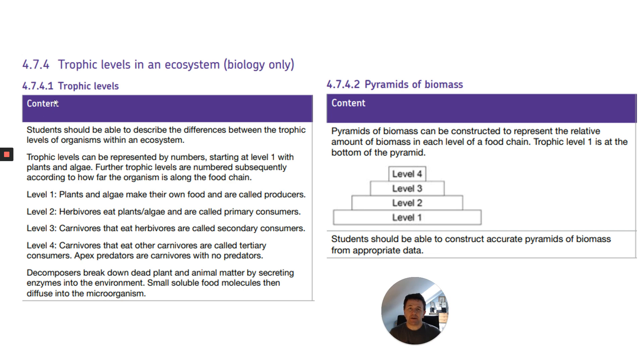Let's do a quick spec check. We're going to look at describing the differences between trophic levels of organisms within an ecosystem, and then pyramids of biomass, how you construct them to represent the relative amount of biomass in each level of a food chain. Students should be able to construct accurate pyramids of biomass from appropriate data.